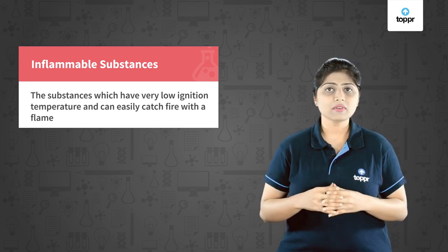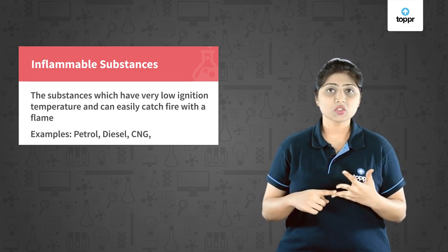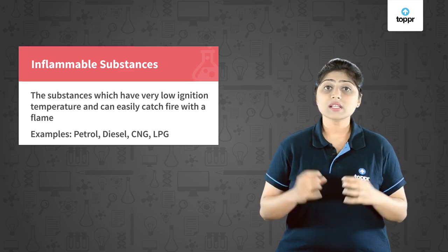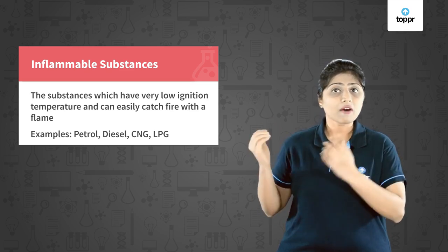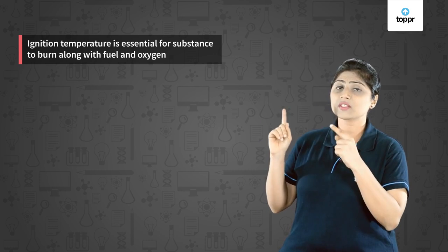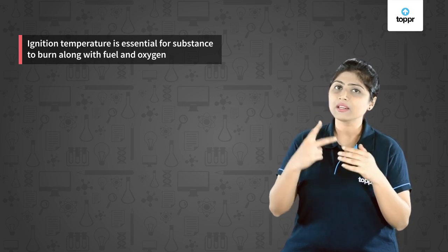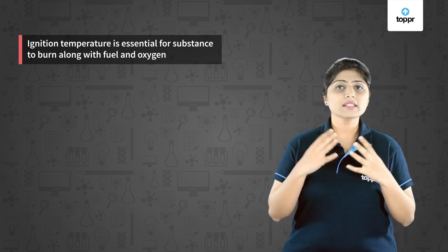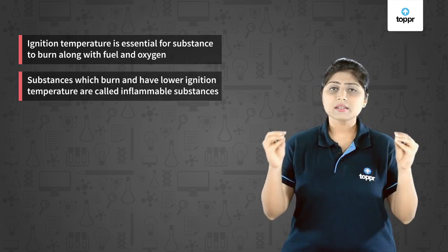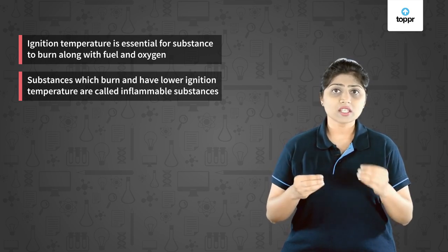Other examples of inflammable substances are petrol, diesel, CNG, and LPG. All these fuels are highly inflammable, so you have to keep them stored in such a way that they don't catch fire easily. Ignition temperature is very much essential for a substance to burn — it is the third condition required along with fuel and oxygen. There are certain substances whose ignition temperature is much lower than others, due to which they catch fire very soon.